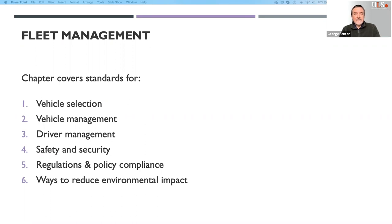The ULS fleet management chapter covers the selection of vehicles, the management of vehicles, driver management, safety and security, issues related to regulations and policy compliance, and ways to reduce the environmental impact of vehicle operations.